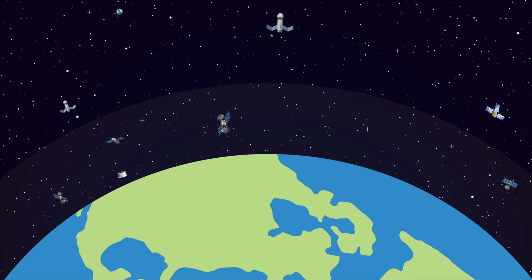In addition to Starlink, Kuiper Systems, OneWeb, and many others have plans to deploy thousands more satellites into the orbit.